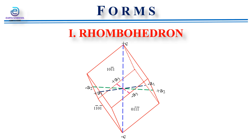The rhombohedron consists of six alike faces which are of rhomb shape. The C axis joins the two solid angles formed by the obtuse angles of the rhomb faces, and the horizontal axis joins the middle of the pairs of opposite edges. In the reading position, the rhombohedron shows three faces above and three faces below.